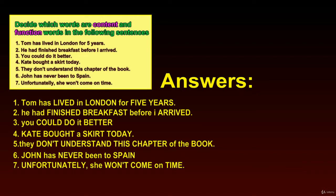1. Tom has lived in London for five years. He had finished breakfast before I arrived. You could do it better. Kate bought a skirt today. They don't understand this chapter of the book. John has never been to Spain. Unfortunately, she won't come on time.